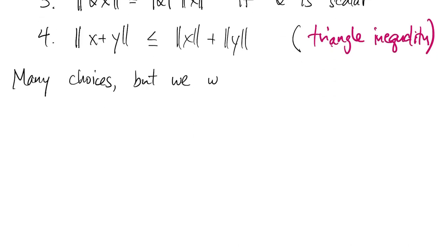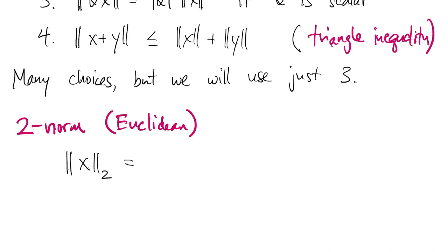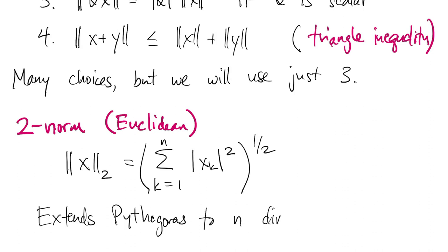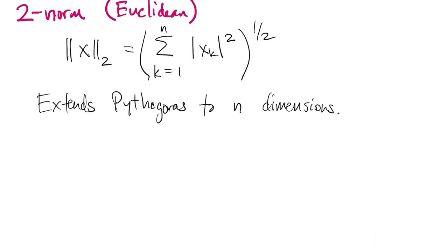There are many possible norms, but we're going to use just three. First, we have what's called the 2-norm, or the Euclidean norm. The 2-norm of a vector x is the sum of the squares of the absolute values of all of its components, with a square root at the end. This extends the Pythagorean theorem to n dimensions, effectively. It corresponds to length in the usual sense that we know in geometry.